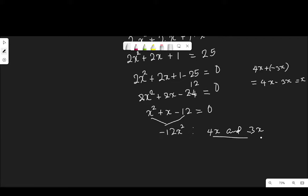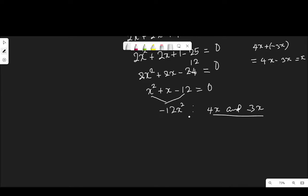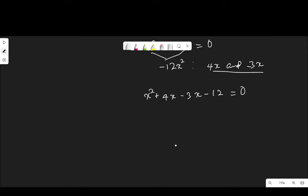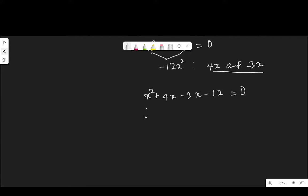So now that we know the factors, we can replace the middle term X with the factor. So that the equation becomes X squared plus 4X minus 3X minus 12 equal to 0. So now I will group it 2 by 2. So that I can factorize it. X squared plus 4X minus 3X minus 12 equal to 0.